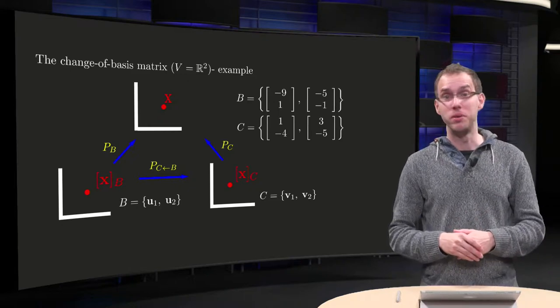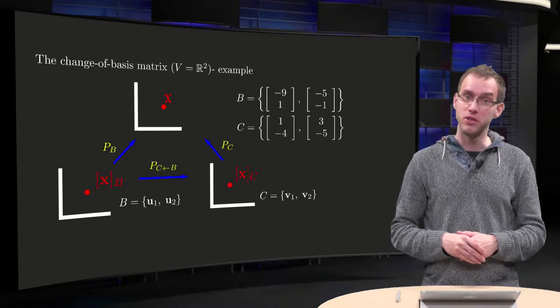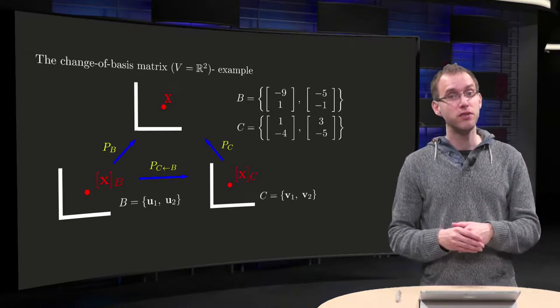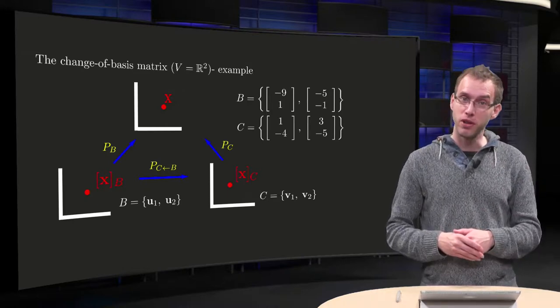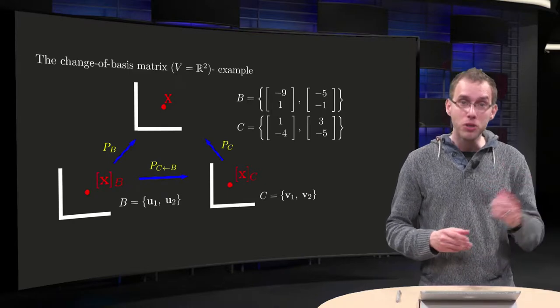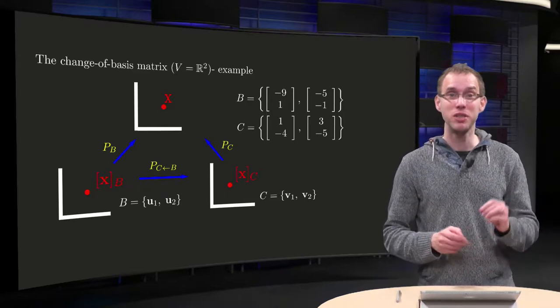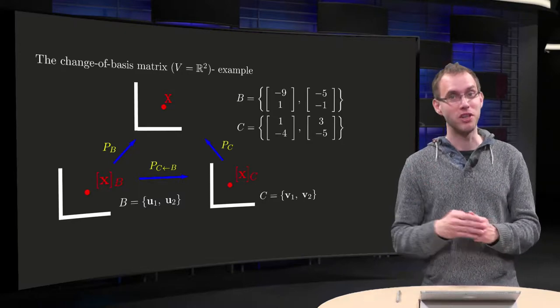You have learned the general methods to determine the change of coordinate matrix P from B to C, and in this video we will apply this method to an example in R2. I will also determine this same change of basis matrix using a second method, so let us take a look.